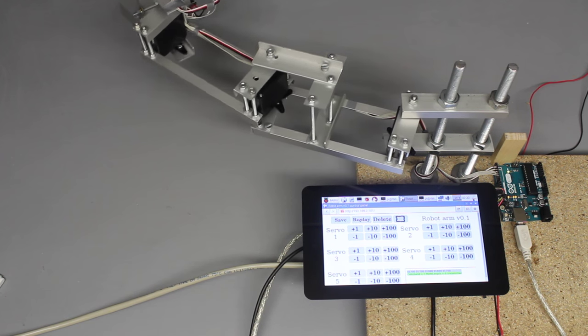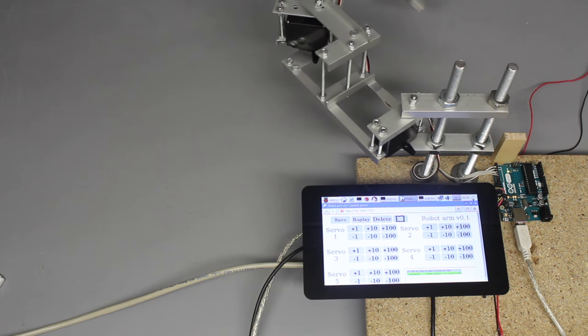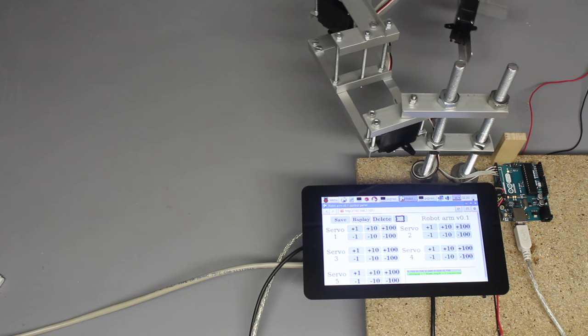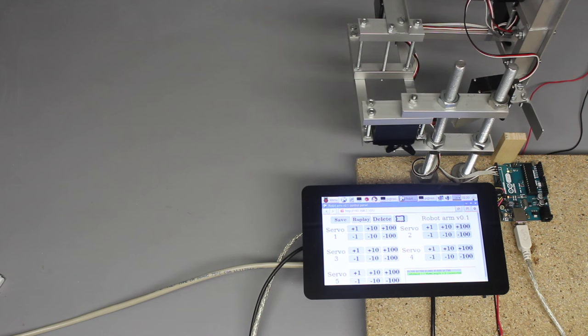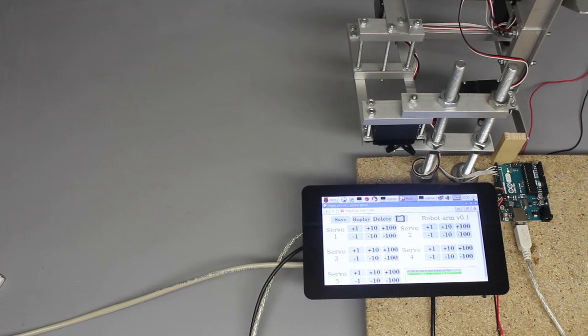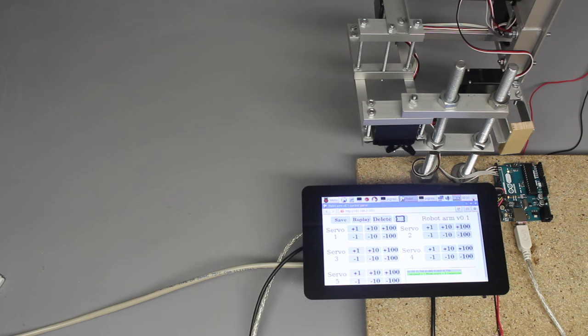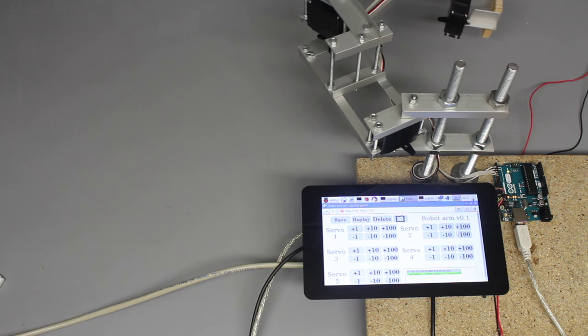With the control buttons you can turn the joints of the robot. Each position can be stored if needed. Multiple stored corner points result in a motion sequence. That sequence can be replayed by processing all stored coordinates.